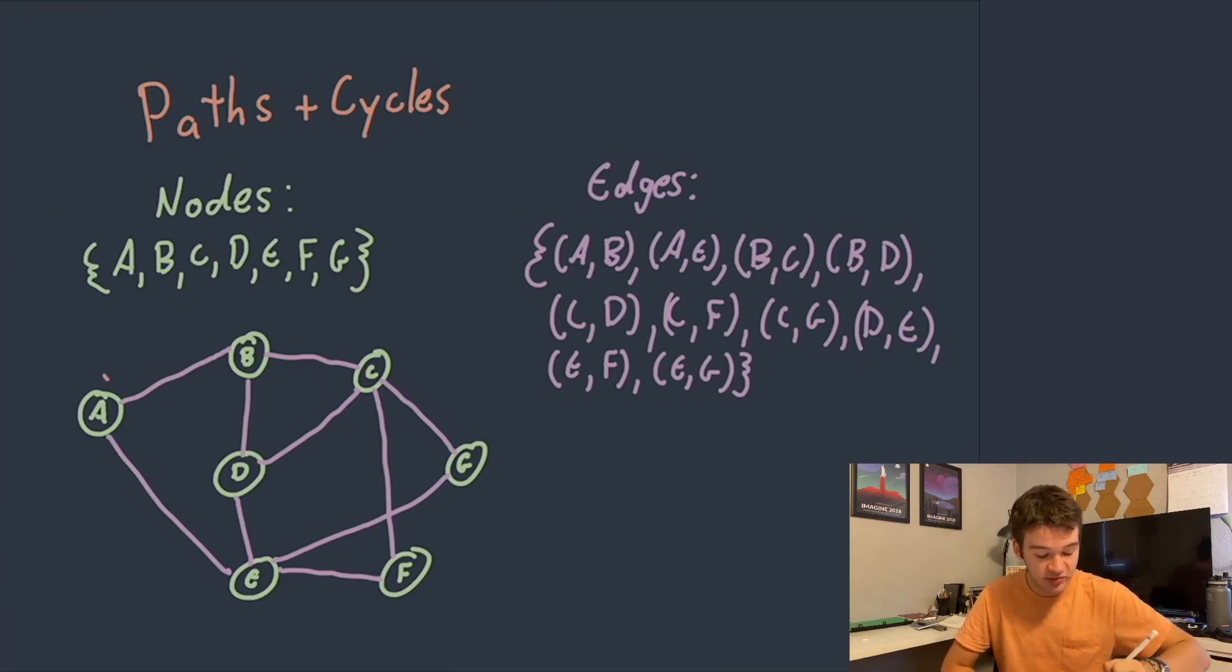So one example of a path here could be A, B, D, E, F for instance. All of those nodes are connected to each other by different edges so it can be defined as a path.